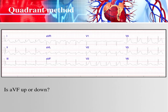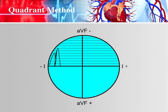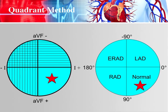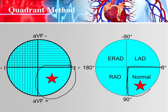Now look at AVF. Is it positive or negative? AVF is up — it's positive. So our QRS complex needs to be on the positive side of AVF, and we shade out the negative side. If you combine the two shaded areas, you have the quadrant your ECG axis is in. It doesn't give you an exact number — you won't know if it's 60, 70, or 50 degrees — but you know it's normal. Knowing whether the QRS axis is deviated or not is what's important.